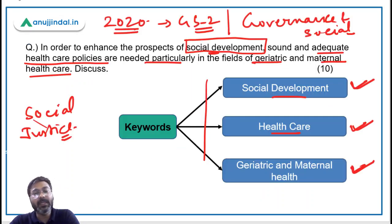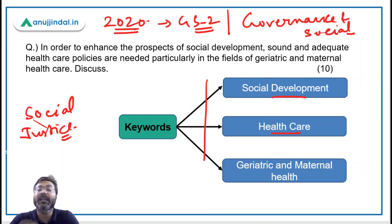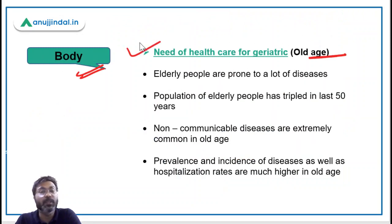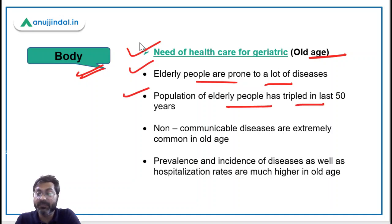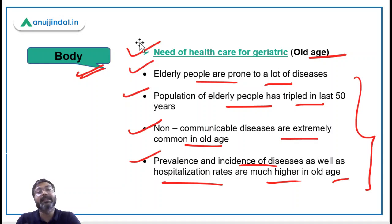Now let's talk about the body. For this particular question, writing the body is quite straightforward because it asks about the need for sound and adequate healthcare policies in geriatric and maternal healthcare. For geriatric — old age — healthcare: number one, elderly people are prone to many diseases; number two, the population of elderly people has tripled in the last 50 years; number three, non-communicable diseases are extremely common in old age; number four, prevalence, incidence, and hospitalization rates are much higher in old age.